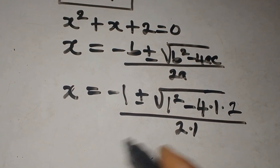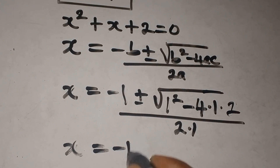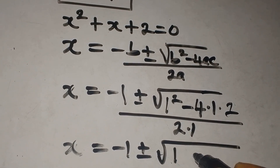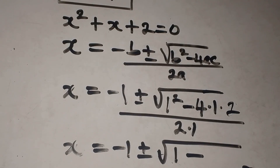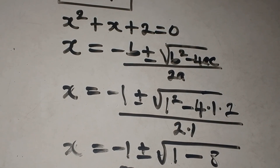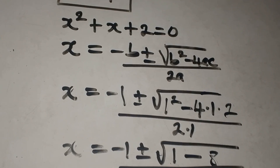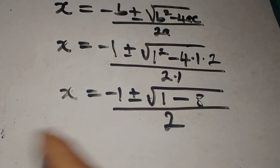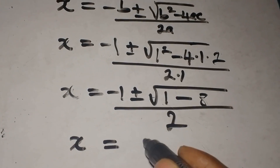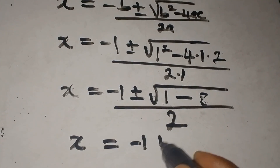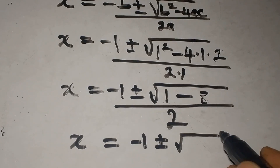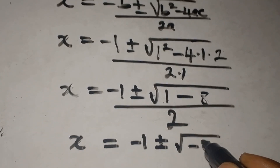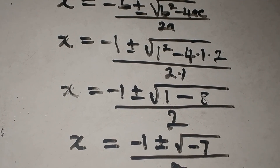Continuing: x equals minus 1 plus or minus the square root of 1 minus 8, divided by 2. That gives x equals minus 1 plus or minus the square root of negative 7, divided by 2.